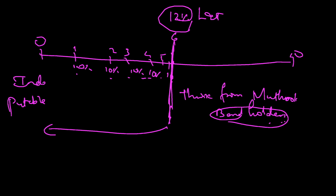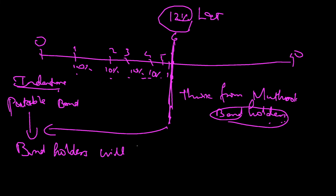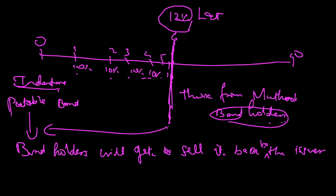If it is a putable bond — which will be mentioned in the indenture — the bondholders get the right to surrender it back, the right to sell it back to the issuer. Once they get back their principal amount, they can reinvest in something like L&T and get 12% interest. So putable bonds favor the investors, whereas callable bonds favor the issuer companies. This is the difference between callable and putable bonds.